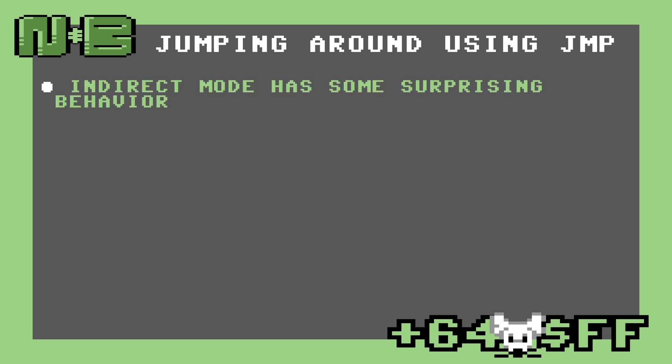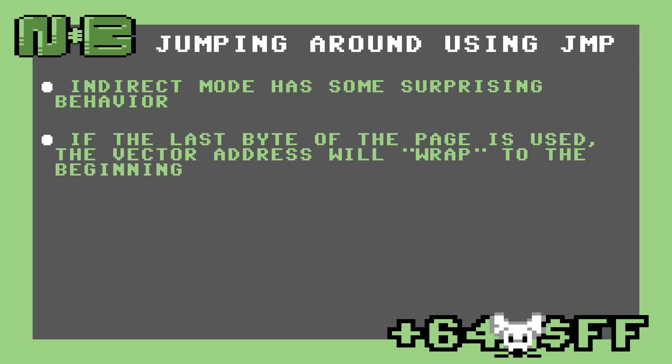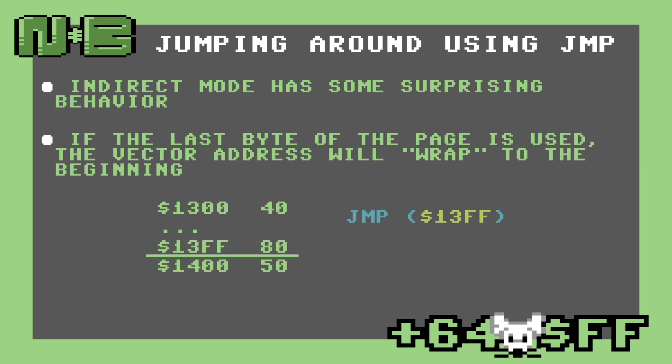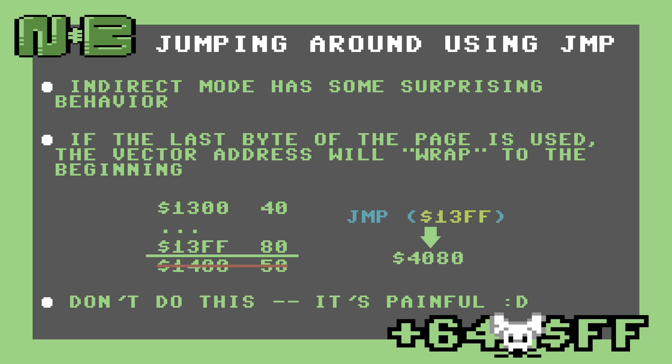Indirect mode has some surprising behaviors if you're not expecting it. If the pointer is stored starting at the last byte of a page, the 8502 will wrap back to the start of the page to read the second byte of the pointer. Suppose we have a pointer that crosses the page boundary by starting at 13FF and ending at 1400. If we use the indirect JMP instruction here, the 8502 will actually jump to location 4080. This is because the 8502 does not increment the page number during an indirect fetch. Instead, it will load the first byte at 13FF, increment its internal page offset by 1, and roll over to 1300 rather than 1400. In short, it's better to keep your pointers away from the end of the page.